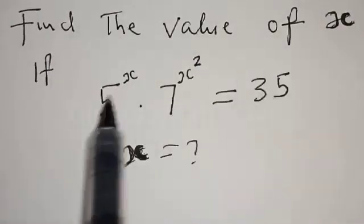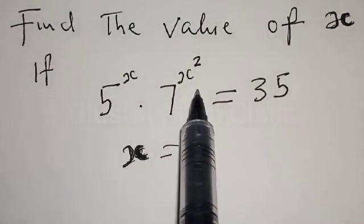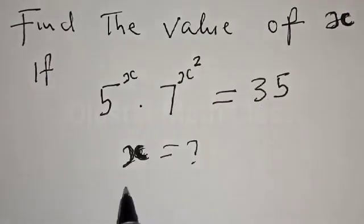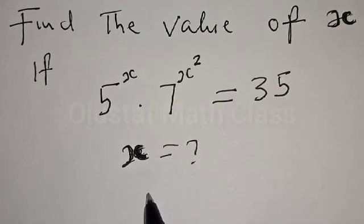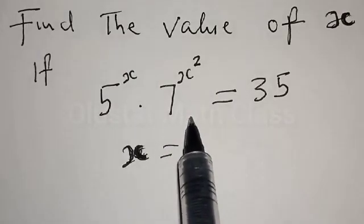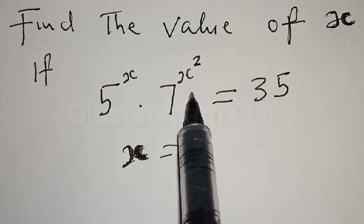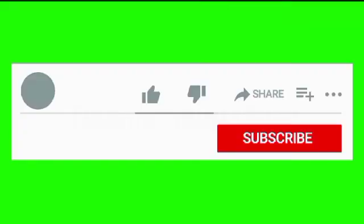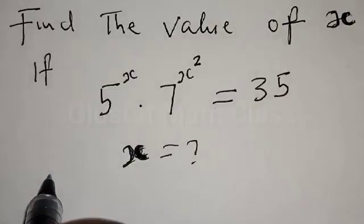Find the value of x if 5 raised to power x multiplied by 7 raised to power x² is equal to 35. Hi everyone, welcome to my class. In today's class we want to look at how to find the value of x from this given exponential equation. Before we proceed, please don't forget to like, share, comment and subscribe — subscription is free. Thank you.